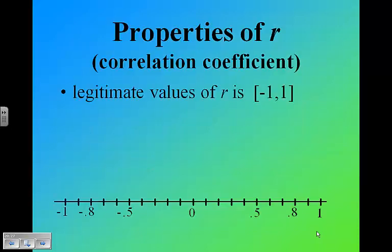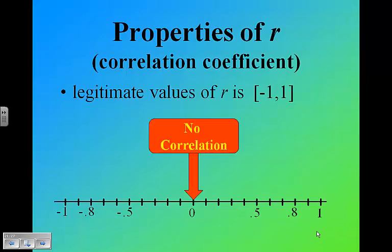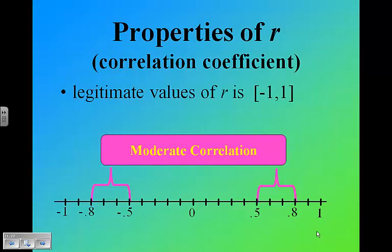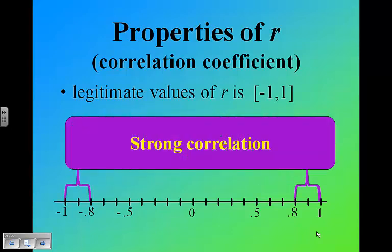A couple of properties. The legitimate values of r are between negative 1 and 1, those are the only values possible. An r value of 0 means no correlation. An r value between 0.5 and negative 0.5 means a weak correlation. Between 0.5 and 0.8, in either the positive or the negative direction, is a moderate correlation. Anything above 0.8 up to 1 is a strong correlation. You need to know how to define the strength. Those are the parameters you want to write down.